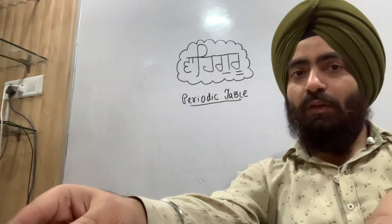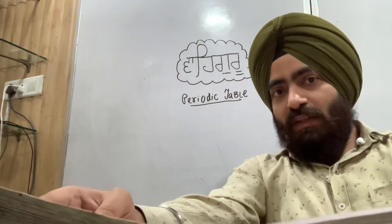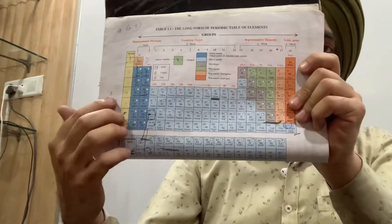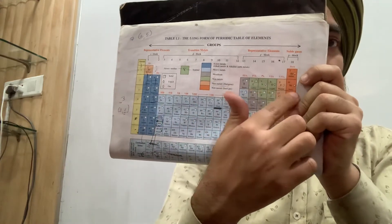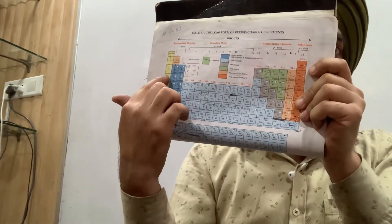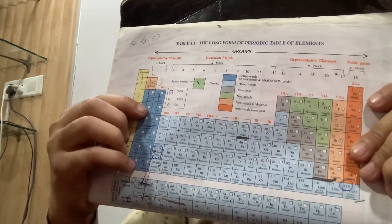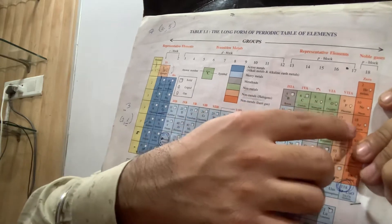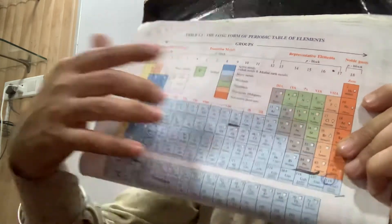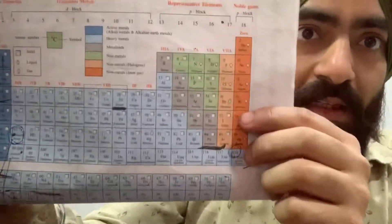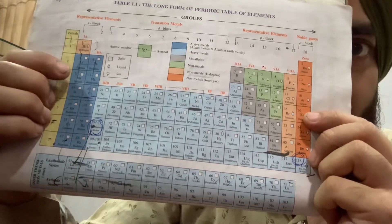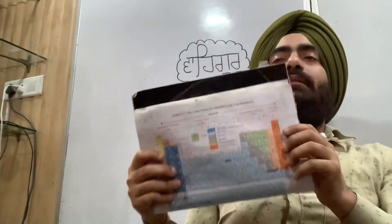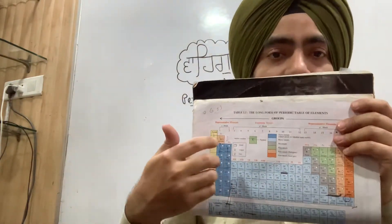In this video, we are going to cover further concepts of the modern periodic table given by Henry Moseley. The third period is called typical elements. The elements are: sodium, magnesium, aluminium, silicon, phosphorus, sulfur, chlorine, and argon. These are all typical elements of the third period.